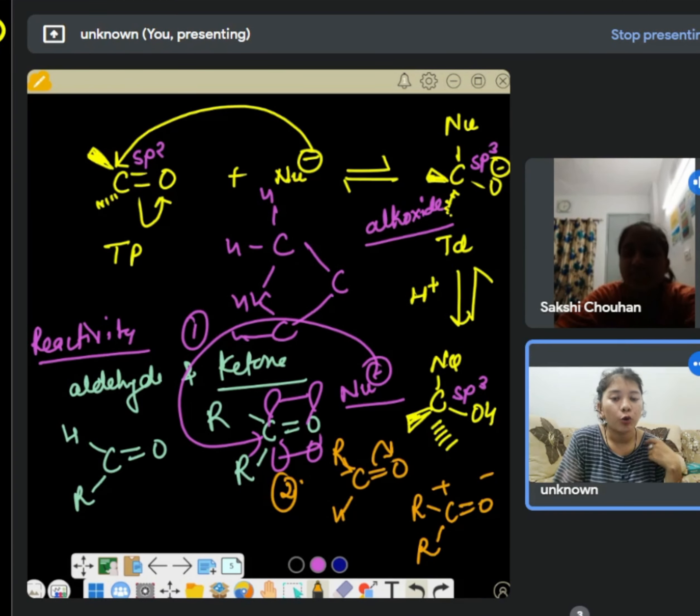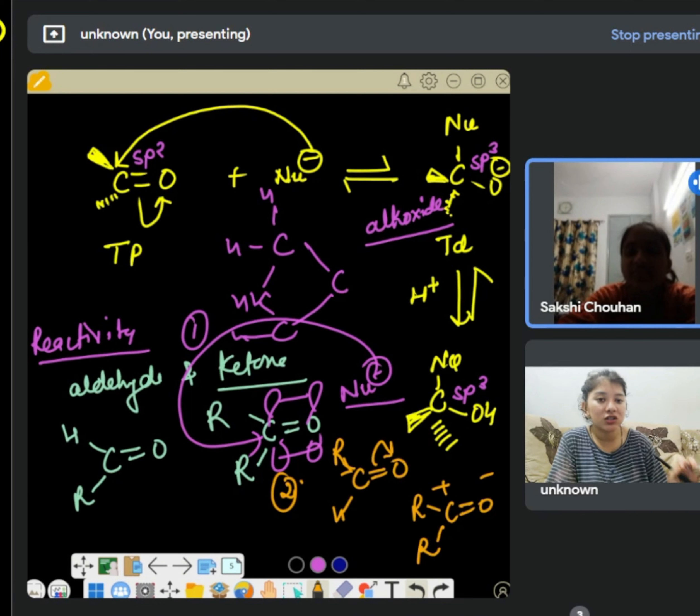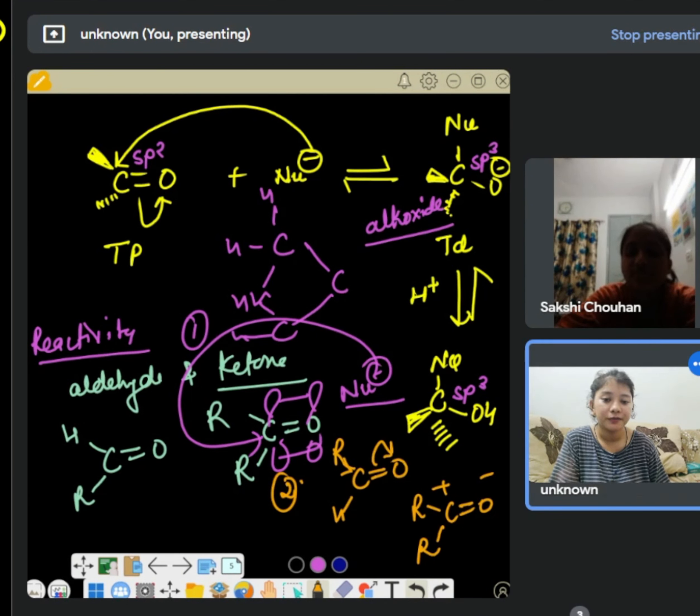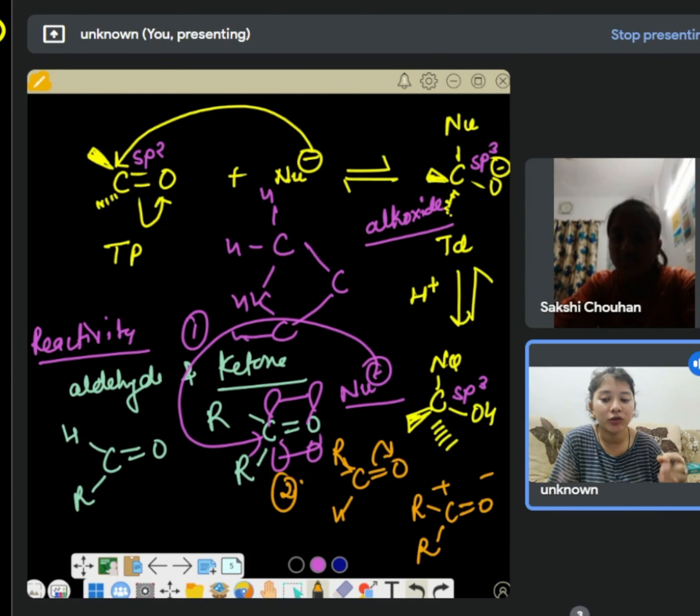Because of that, the polarity and the positive charge will be more in aldehyde than ketone. So obviously, aldehyde will be more reactive. Yes, ma'am. So all these factors, whether it is steric factor or the electronic factor, we call it i-effect. They are favoring aldehyde. I mean aldehyde is more reactive than the ketone, compared to the ketone.